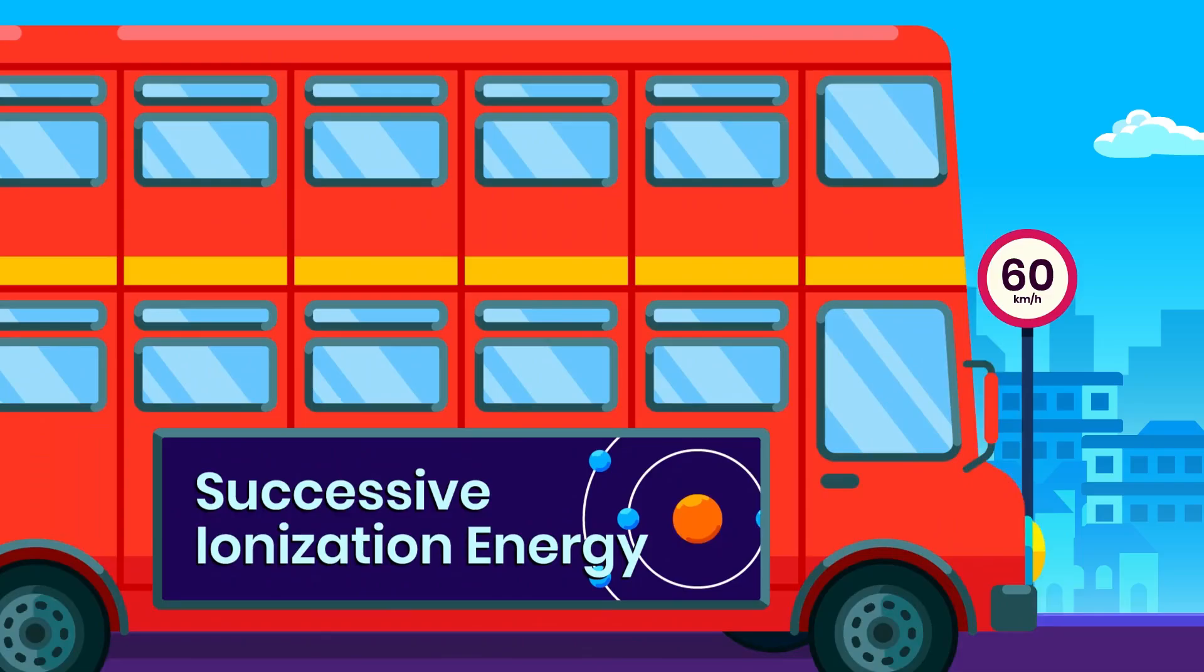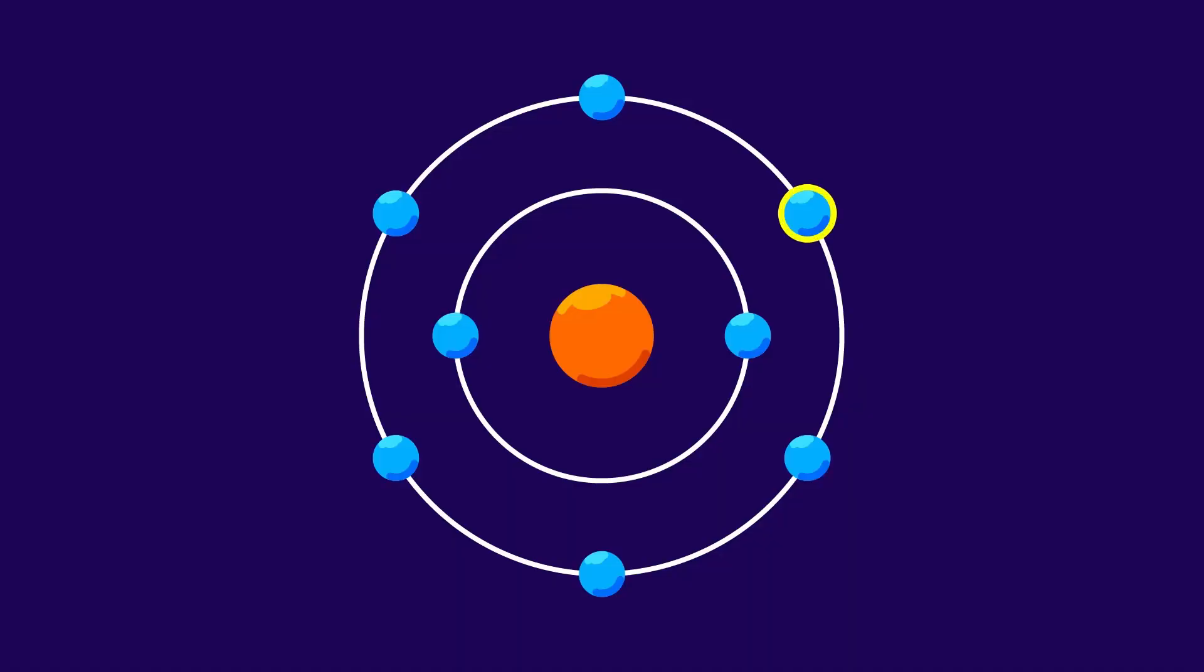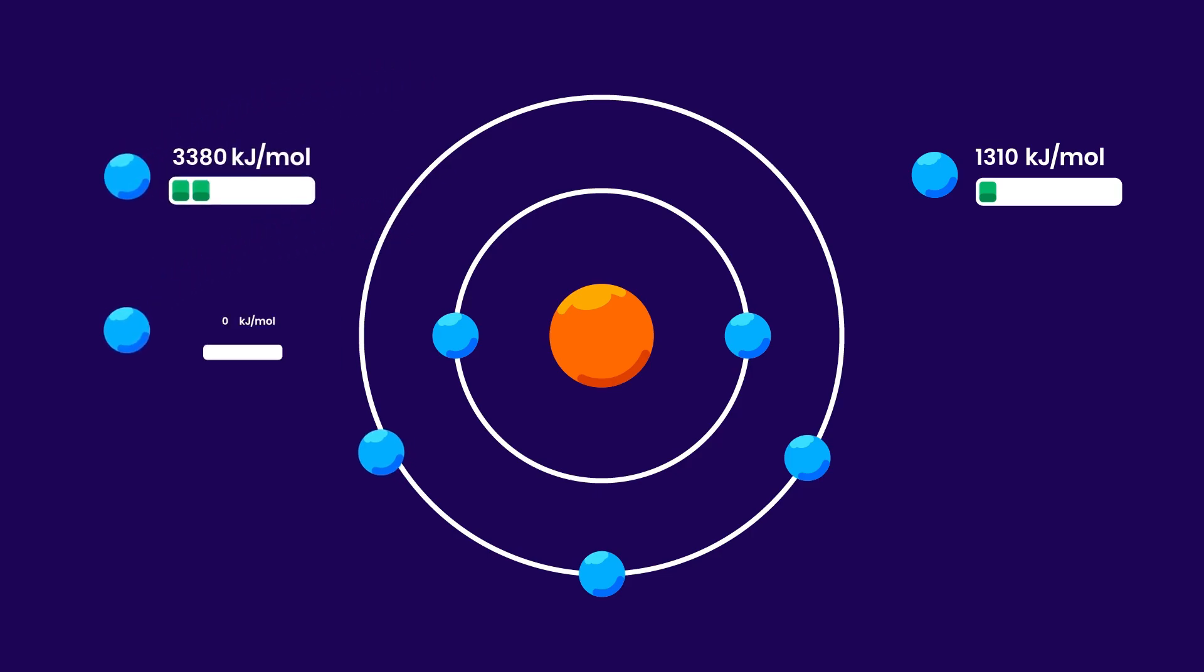Because of this concept, the ionization energies required to remove one electron after another change successively. The first ionization energy represents the energy needed to eliminate the first electron from an atom, and the second one refers to the energy required for the second electron removal, and so on.